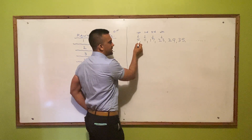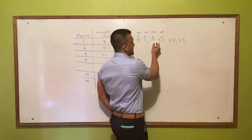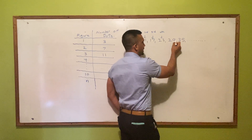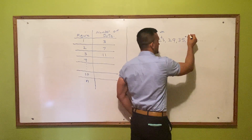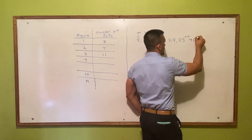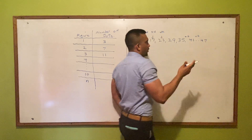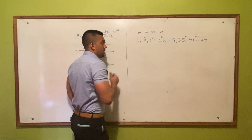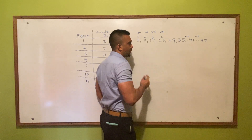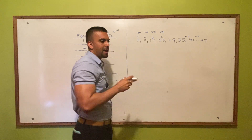this sequence increases by 6. 5 plus 6 is 11, 11 plus 6 is 17, 17 plus 6 is 23, 23 plus 6 is 29, 29 plus 6 is 35, 35 plus 6 gives us 41, 41 plus 6 gives us 47. Any time a set of numbers increases by a fixed amount, we have a sequence governed by a particular equation.